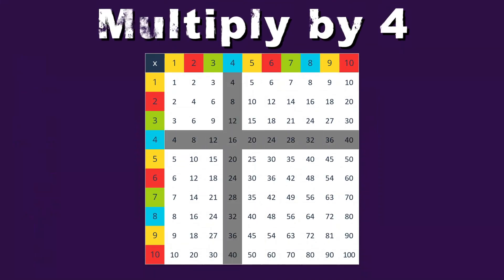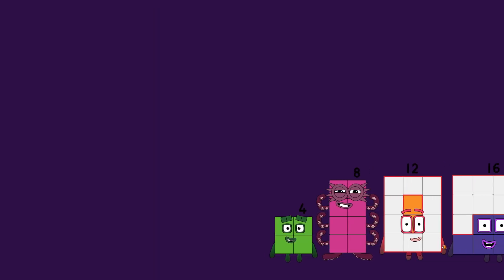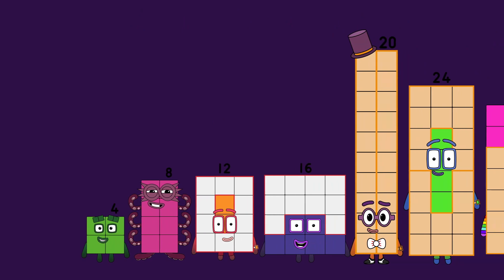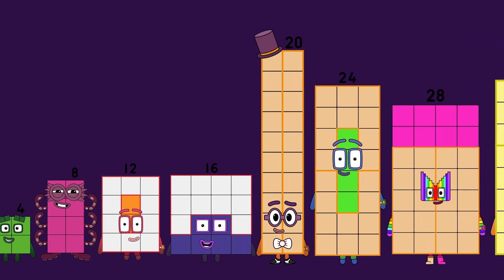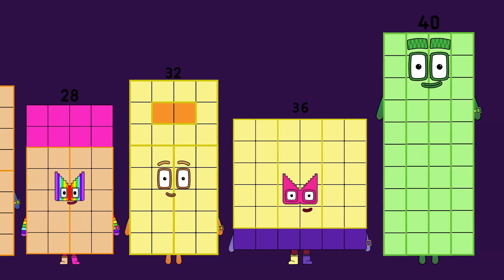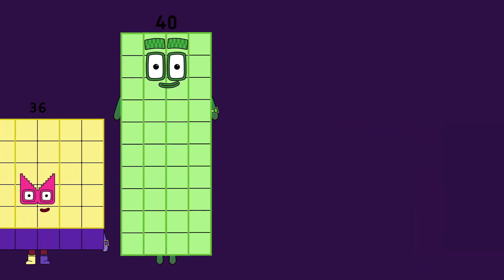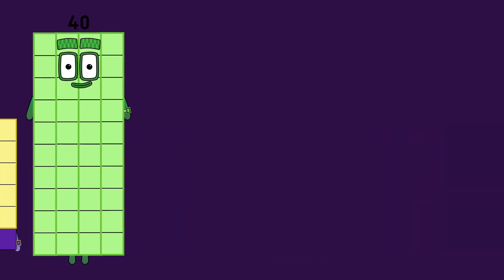When you multiply by four, you'll see what's in store. You can use the times tables to learn and explore. 4, 8, 12, 16, 20, 24, 28, 32, 36 — there's more. For who completes the list of the multiples of four? When you multiply four from one through ten in the store.